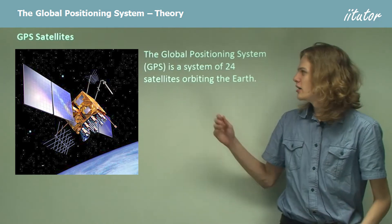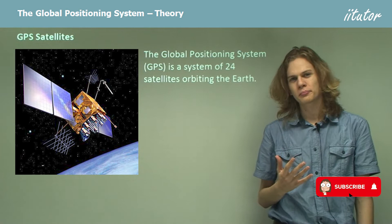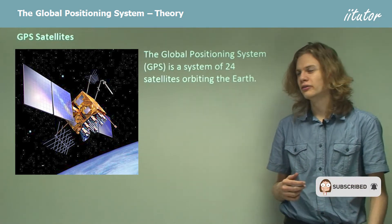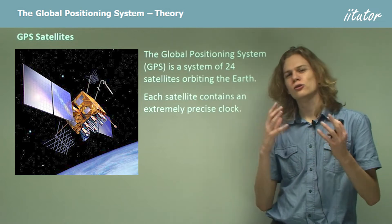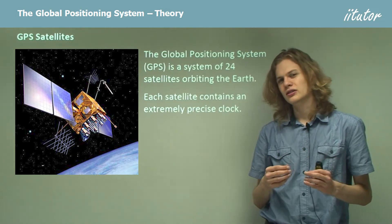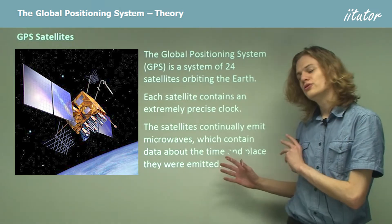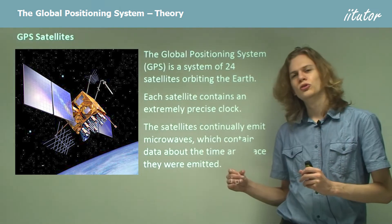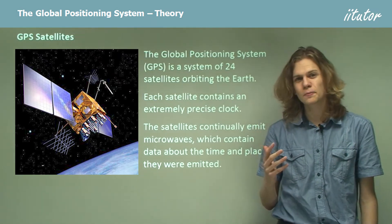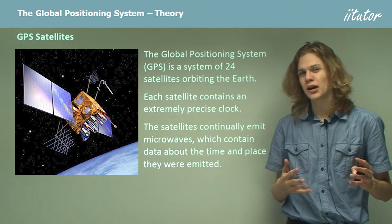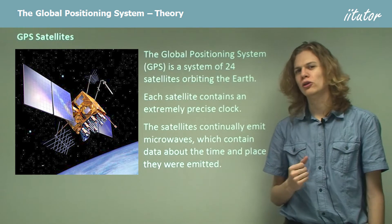The global positioning system is a system of 24 satellites that are in orbit around the earth. They were launched up there over a series of a fair number of years. Each satellite contains a very precise clock on board. It also contains a radio transmitter which sends out information about this clock. The satellites continually emit microwaves which go down to the surface of the earth, and the microwaves contain information about the exact time at which they were emitted, according to its very accurate atomic clock.